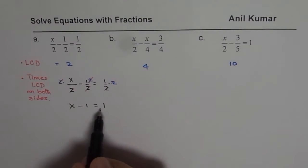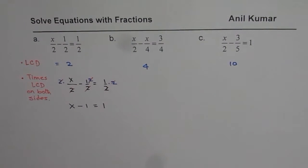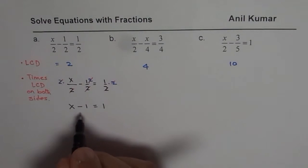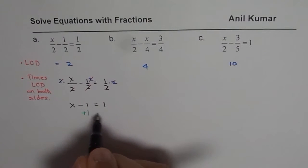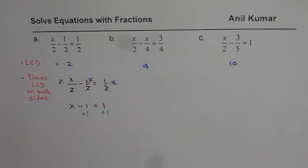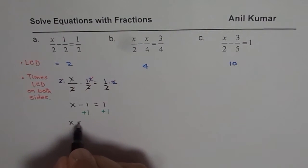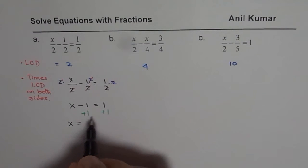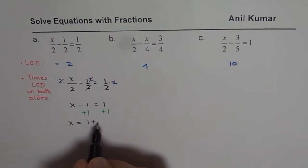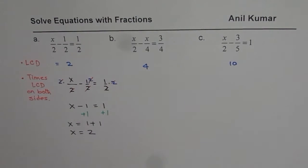Now you can solve for x, adding 1 on both sides. So at this stage, you can add 1 on both sides. So when you add 1 on both sides, what do you get? You get x equals to minus 1 plus 1 is 0. On the other side, you get 1 plus 1. So you get x equals to 2. So that is the solution.